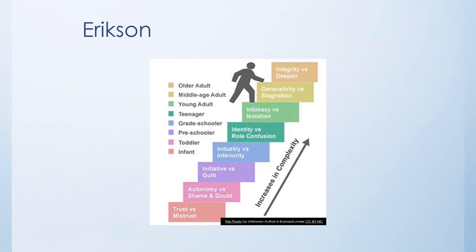Erikson's stages move from trust versus mistrust — where the infant develops trust when caregivers consistently meet their needs — through autonomy versus shame in the toddler, initiative versus guilt in the preschooler, and industry versus inferiority in the school-age child. Notice that Erikson's stages increase in complexity, and each stage has a positive and a negative pole.